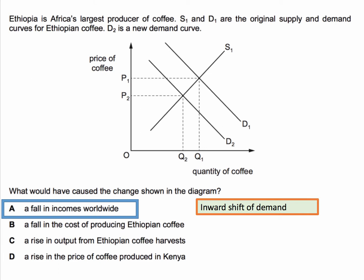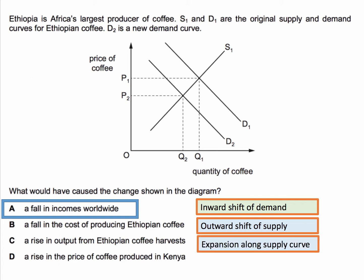Let's look at the other options. A fall in the cost of producing Ethiopian coffee would cause an outward shift of supply from S1. A rising output would be an expansion along the supply curve prompted by an outward shift of demand. And if the price of coffee produced in Kenya goes up, we can assume Kenyan and Ethiopian coffee are substitutes, so that would cause an outward shift of demand for Ethiopian coffee. So the correct answer is A — an inward shift of demand.